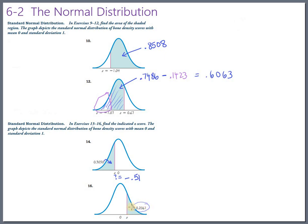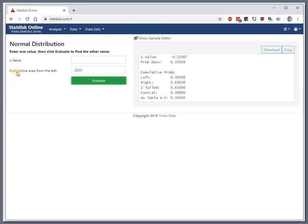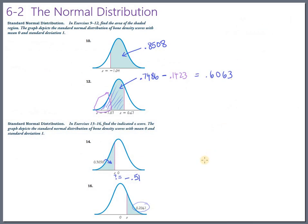But this is the area on the right. And notice the StatDisk is set up to do cumulative area from the left. So the StatDisk is expecting us, if it's going to find this z-score for us right here, it's expecting us to give it this area, right? The area to the left. And we're going to have to say, well, the whole area of the entire curve is 1, 100%. So this part right here, this part is the complement of the other part.